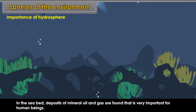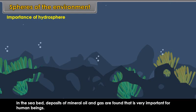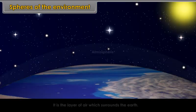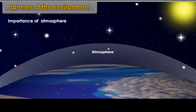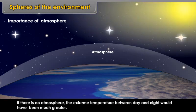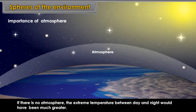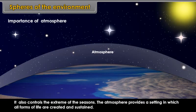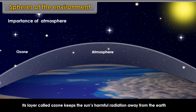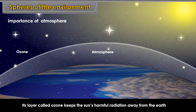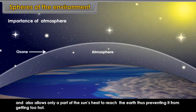Atmosphere. It is the layer of air which surrounds the earth. Importance of atmosphere: If there is no atmosphere, the extreme temperature between day and night would have been much greater. It also controls the extremes of the seasons. The atmosphere provides a setting in which all forms of life are created and sustained. Its layer, called ozone, keeps the sun's harmful radiation away from the earth and allows only a part of the sun's heat to reach the earth, thus preventing it from getting too hot.